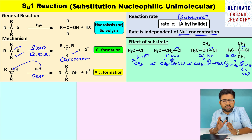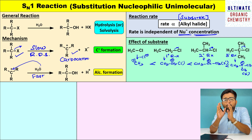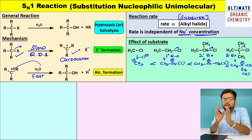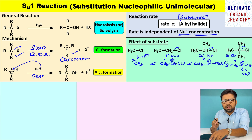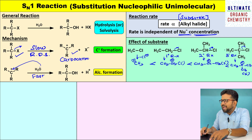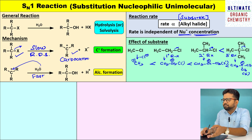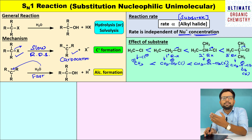The most stable intermediate will be formed very easily. We know the first step is a slow step, and whatever intermediate is more stable will be formed more easily. Once it is formed, the second step — which is already a faster step — proceeds. Among all four carbocations, the tertiary butyl cation is the most stable and will be formed most easily. Therefore, the tertiary alkyl halide will be the most reactive in SN1 reaction, followed by secondary alkyl halide, then primary alkyl halide.